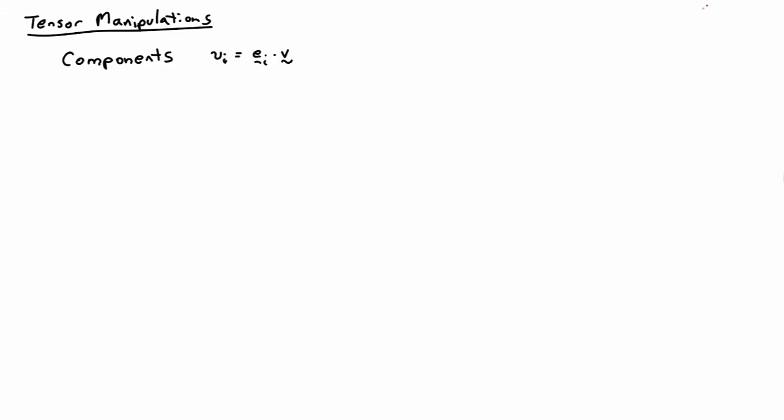These are just rules for operating and doing operations with tensors. As a reminder, if we have a vector v and we want its components, what we do is take the dot product with the basis vector and that gives us the components of that vector. For tensors we have a similar rule, but for a tensor we're going to need two basis vectors.